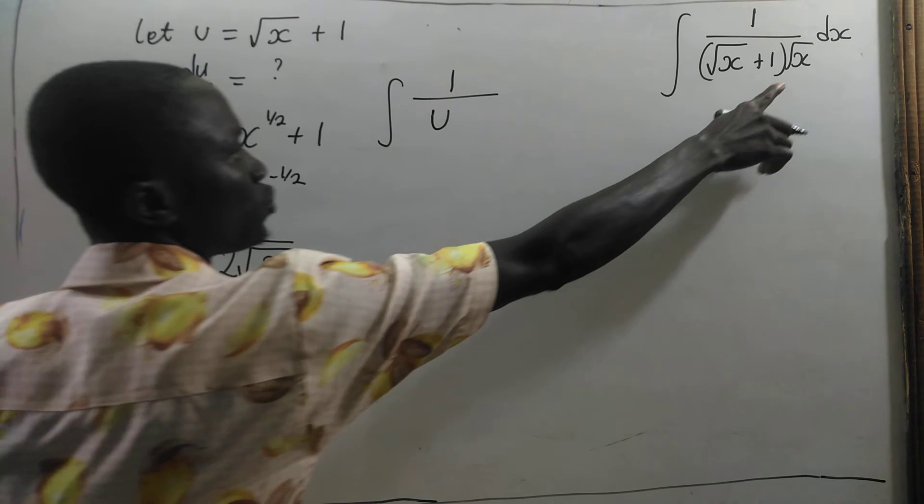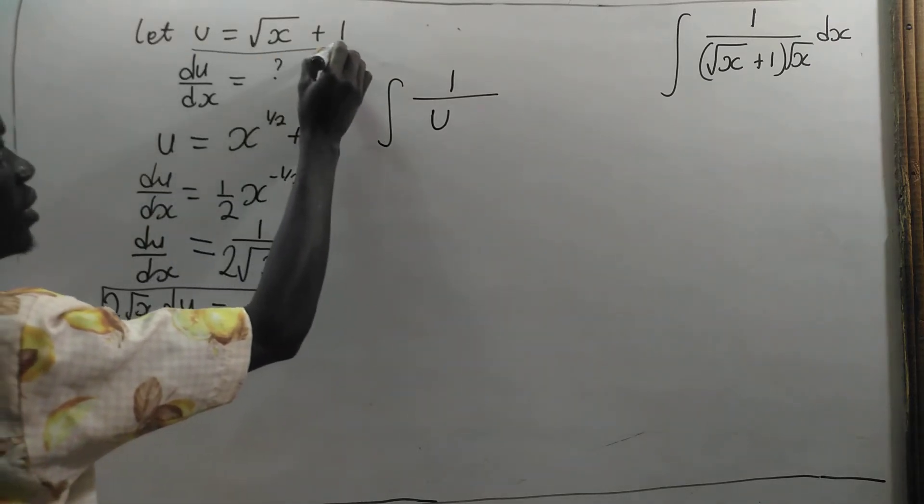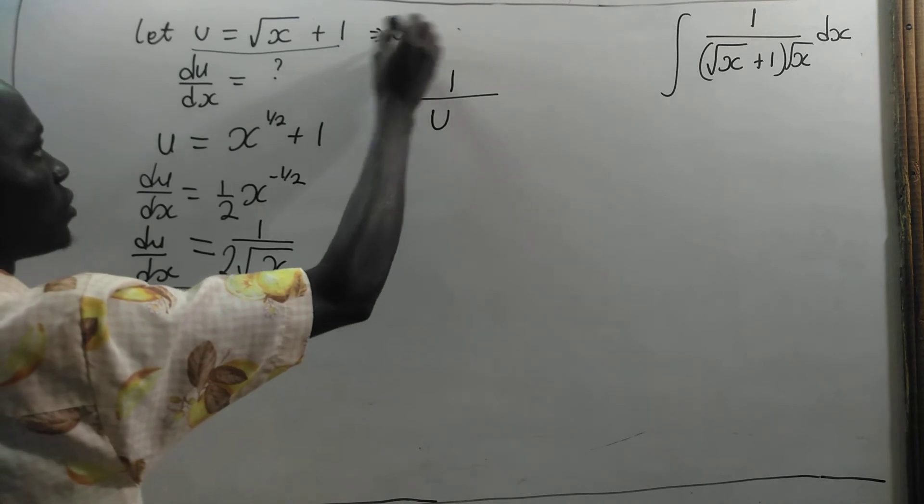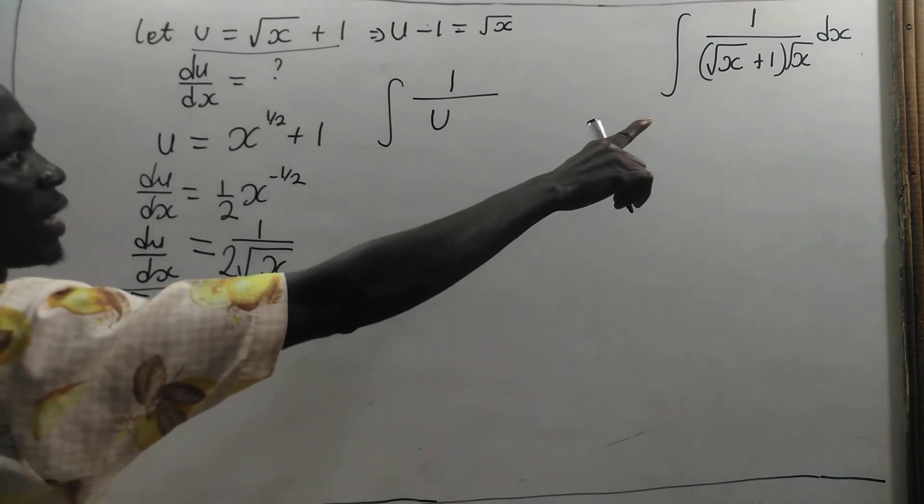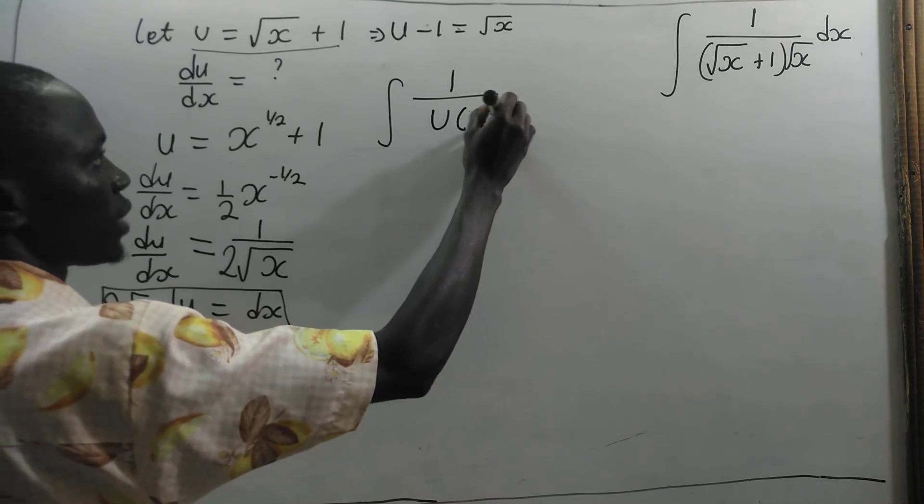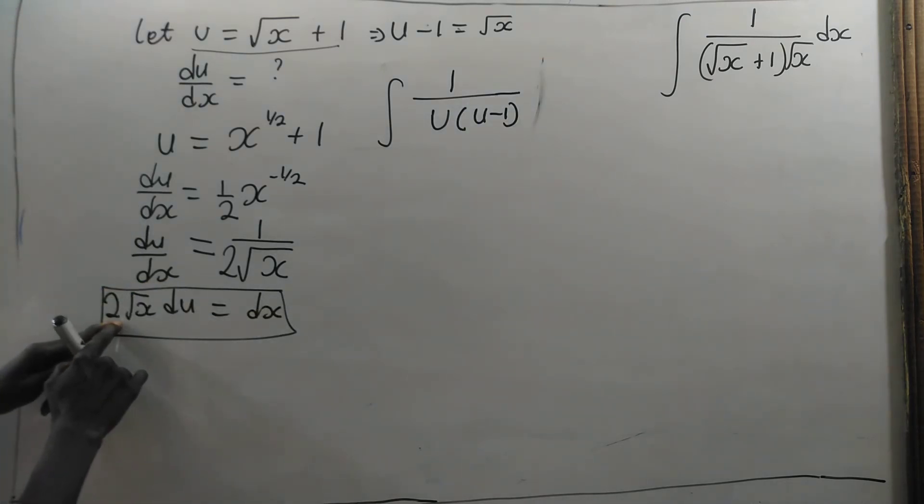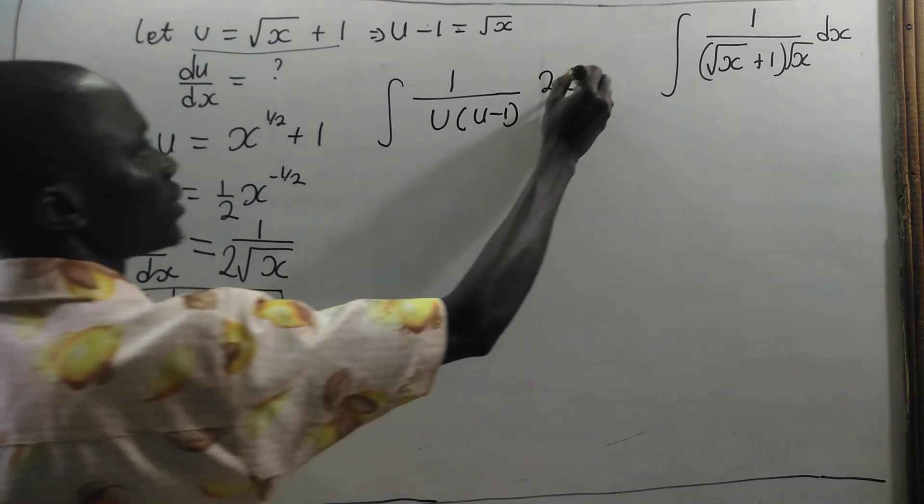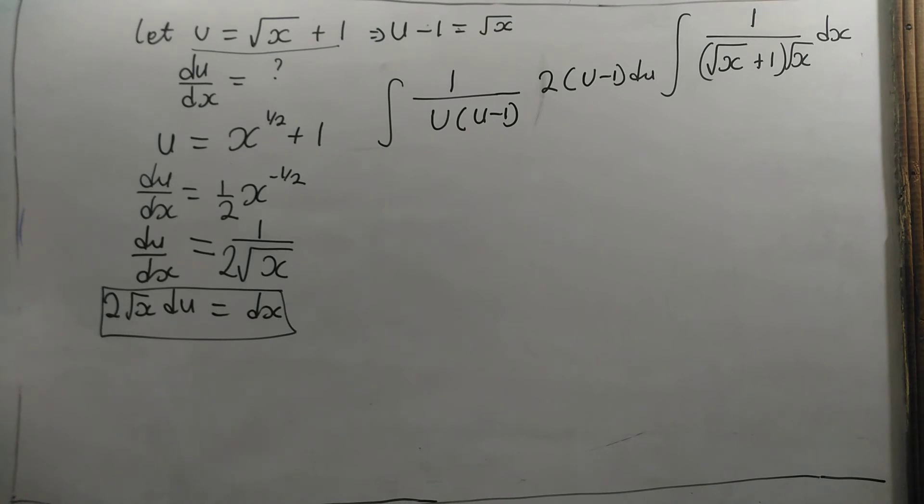And here I have root x. So what am I going to do? What we are going to do here is very simple. We will take this 1 and make root x the subject. From here I am going to have u minus 1 is equal to root x. So I am going to put times u minus 1 here. And I will bring my 2 into bracket, root x is u minus 1 du.